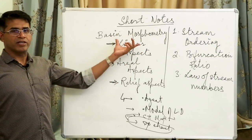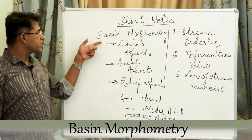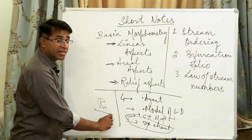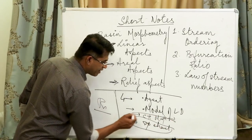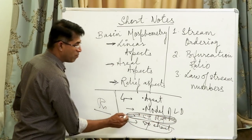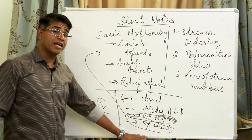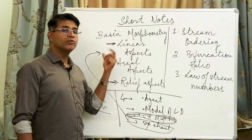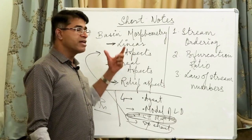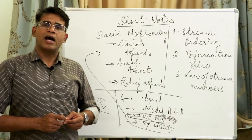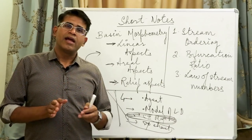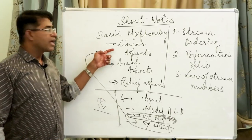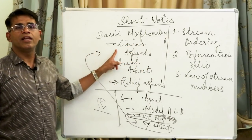Basin morphometry or channel stream morphometry essentially studies three things. Under channel or basin morphometry, the first is what's called the linear aspect. The linear aspect of basin morphometry is about river length, the river segment, and how it relates to other river lengths and segments. Stream ordering, bifurcation ratio, and the law of stream numbers are all part of the linear aspects.